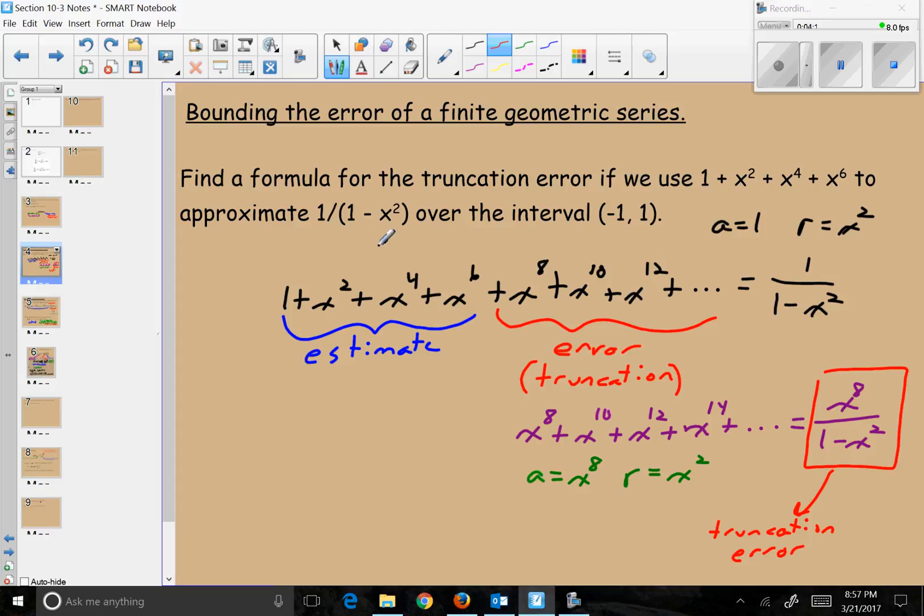So this is the truncation error of our finite geometric series that we were using to estimate 1/(1-x²). If you're trying to bound the error for a finite geometric series, just pretend it was an infinite series, cut off the part that was the estimate, and from what's left do the first term over 1 minus r to get a formula for the truncation error.